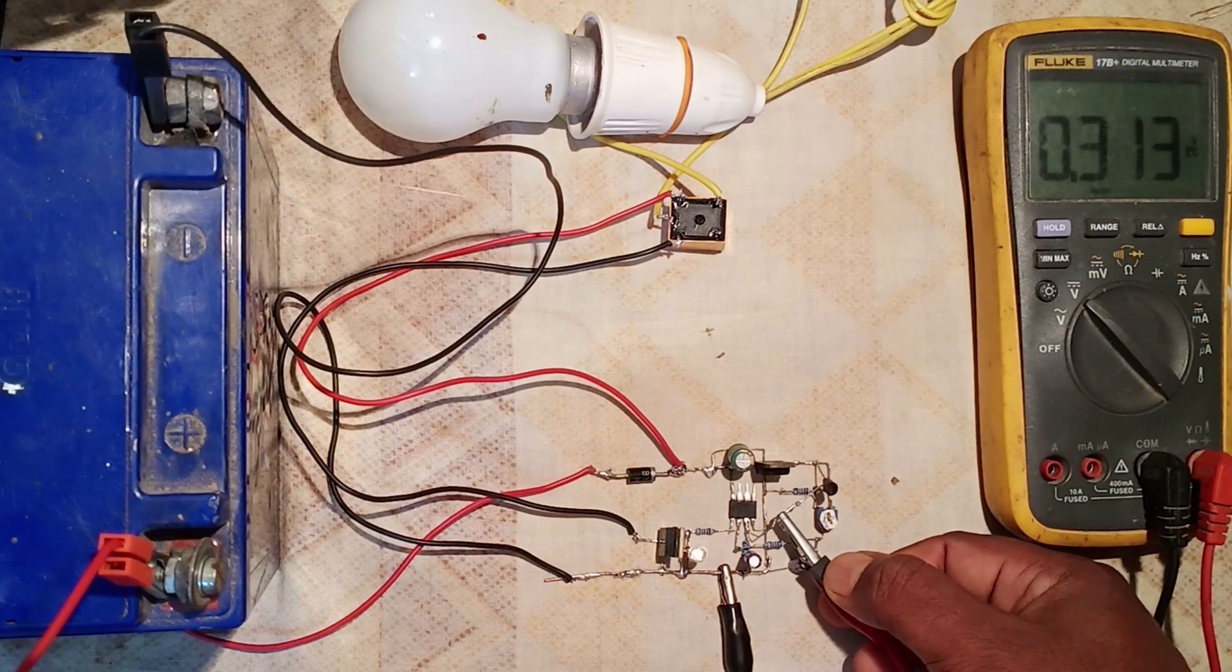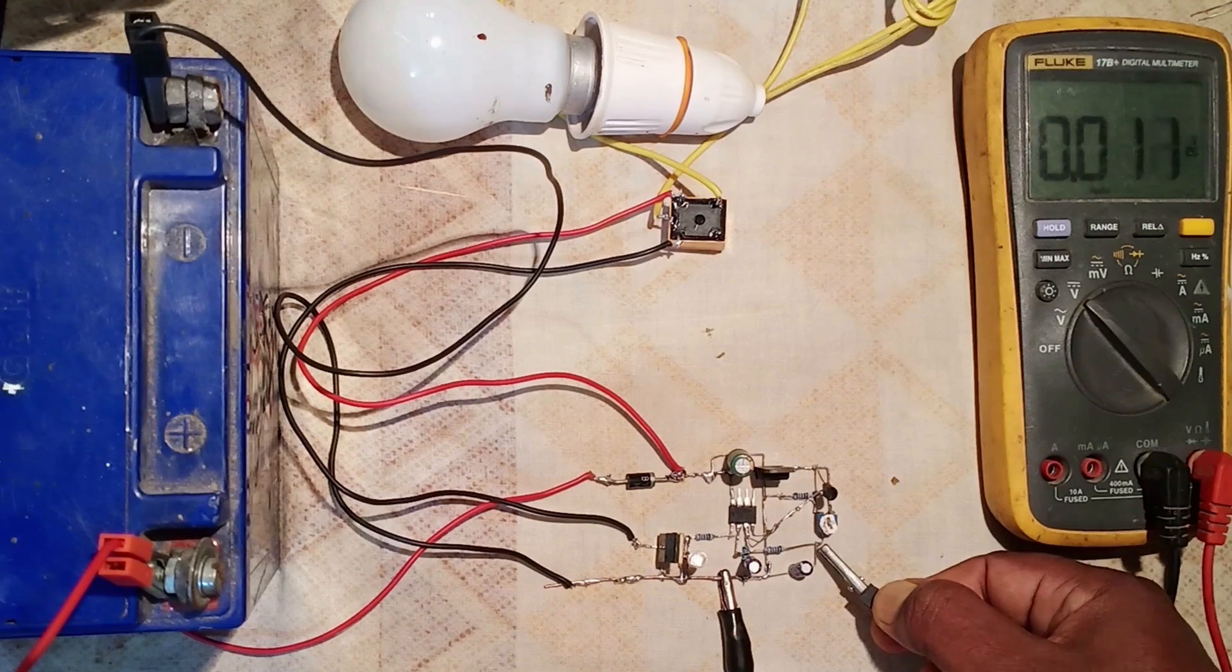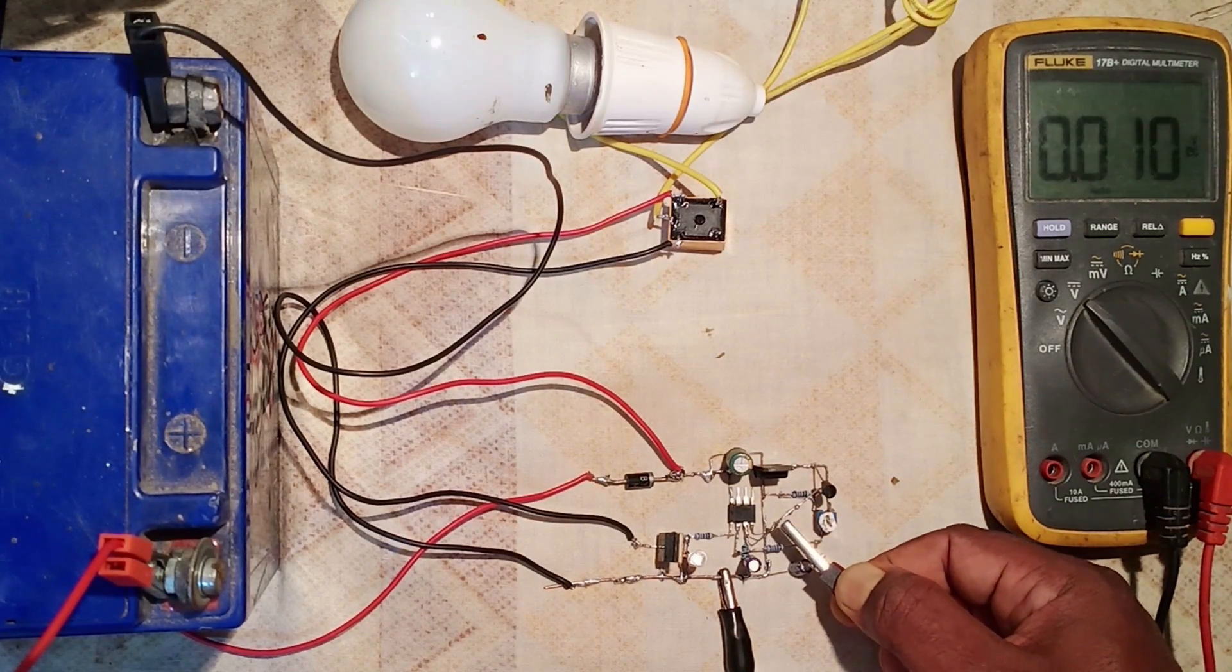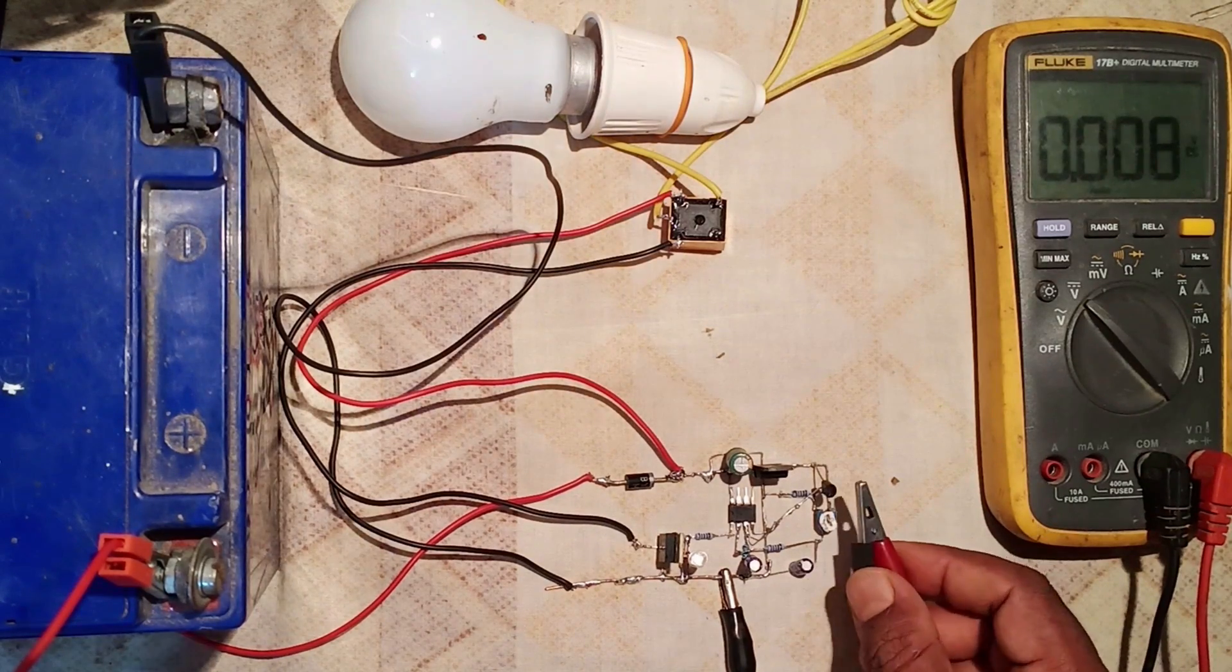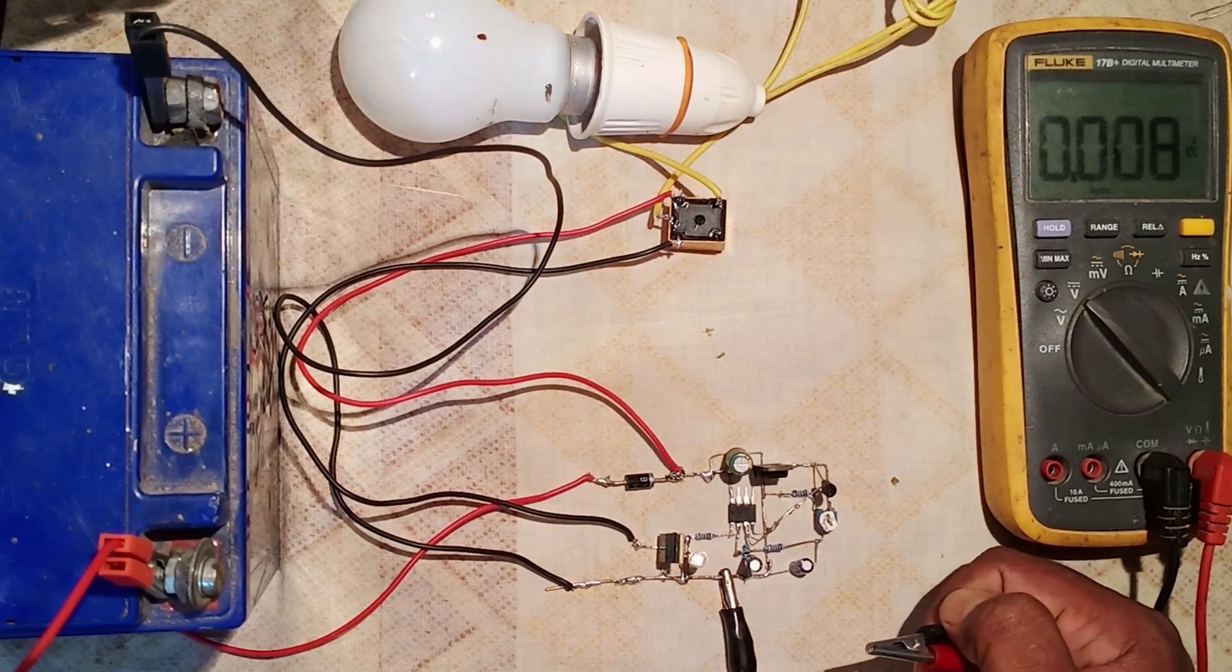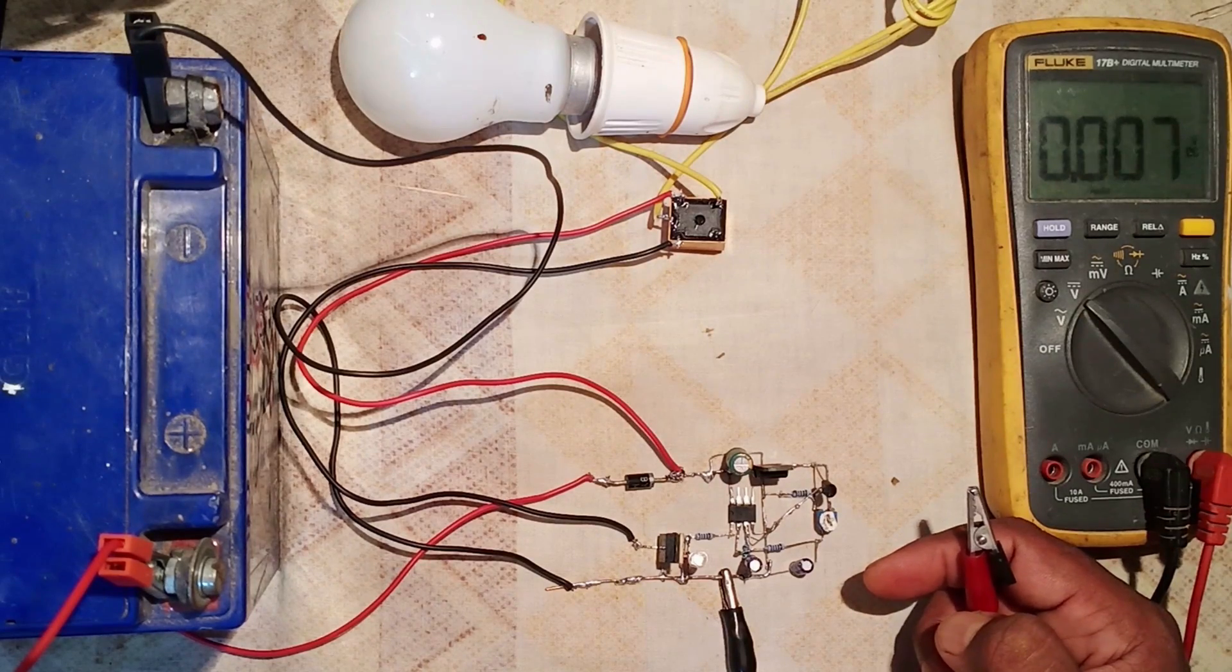It means if we divide the output voltage of this LM35 by 10, then we will get the temperature in Celsius scale.